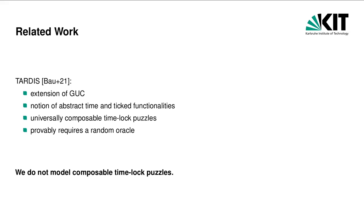When talking about timed commitments in the setting of composable security, a relevant result is the TARDIS framework by Baum et al. TARDIS is an extension of the generalized UC framework with the notion of abstract time. This allows defining timed functionalities for building blocks such as universally composable timelock puzzles, which can then be used for MPC with fairness properties. However, it can be shown that random oracles are required for such composable timelock puzzles. The goals of TARDIS and our goals are completely different: we use standard timed commitments to construct a non-timed composable commitment scheme in the plain model. In particular, we do not model composable timelock puzzles.